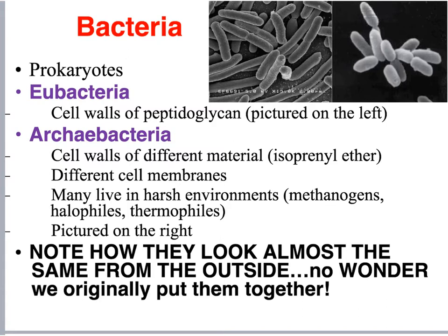Eubacteria cell walls are made up of a substance called peptidoglycan, which is different from the substance making up the cell walls of archaebacteria. Archaebacteria are ancient bacteria that have been on the planet for billions of years — believed to be some of the first organisms present on Earth. They live in extremely harsh conditions. Examples are methanogens, halophiles, and thermophiles, found at the bottom of volcanic vents, the bottom of oceans, and geysers.